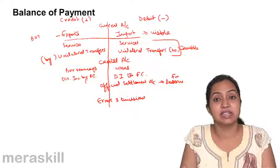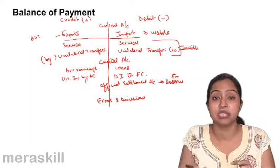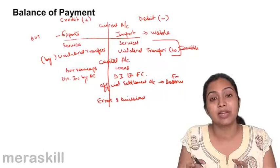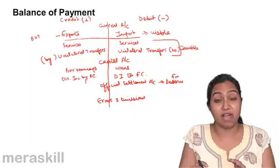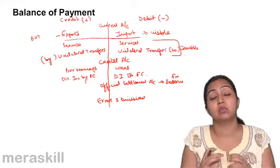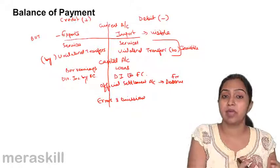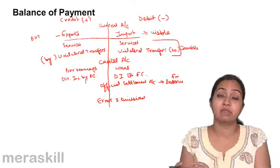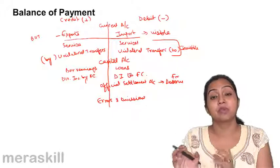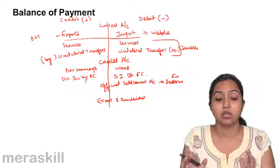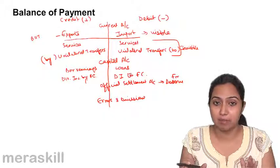So it balances itself, and it is called balance of payment because it is always in a state of balance. Though practically it may not always be so, from a theoretical point of view, the balance of payment is always balanced. We do not make a separate balance of payment for each country — we may have an unfavorable balance with America due to high imports, and a favorable balance with some South Asian countries, but all transactions with the rest of the world are consolidated to give a clear picture of our country's balance of payment.